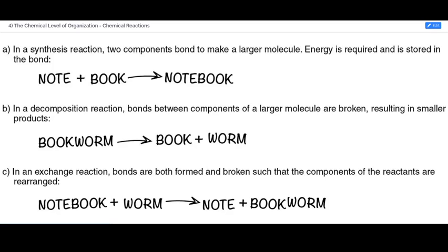And then the third one is when we have some sort of exchange. We take two pieces and rearrange their component parts together. Now, in this example, they have notebook plus worm yields note plus bookworm.